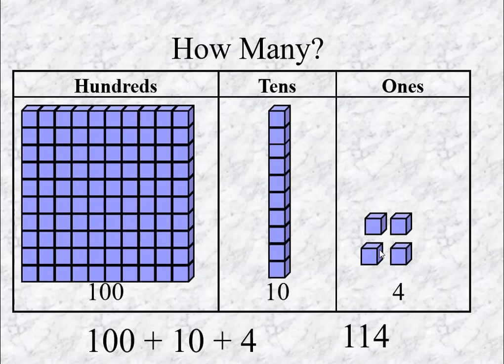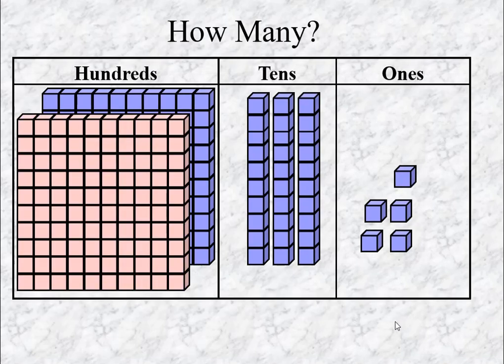Okay students, ikkada 4 ones, 1 ten, 1 hundred. The second one. Now in notebook write down hundreds, tens, ones. Notebook lo raya ndi answer chep pa ndi. Ippudu choo ndi, two hundreds, three tens, five ones. So answer is 235.